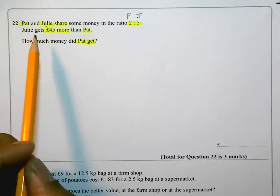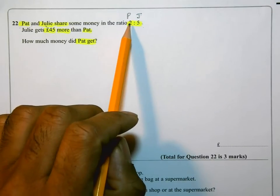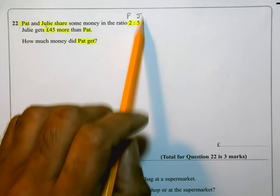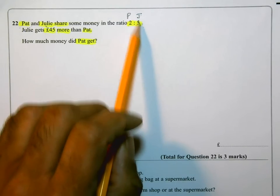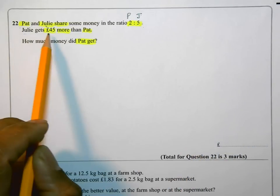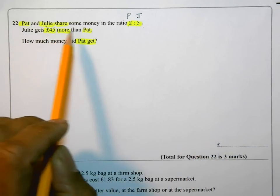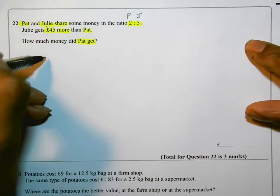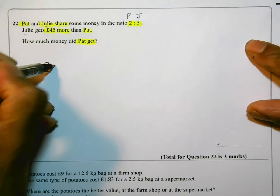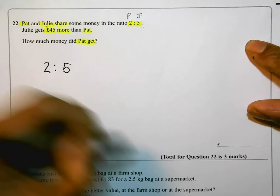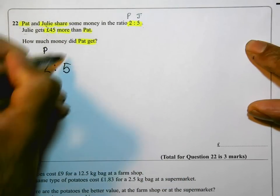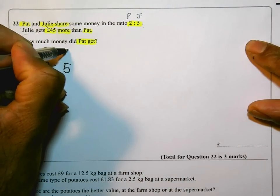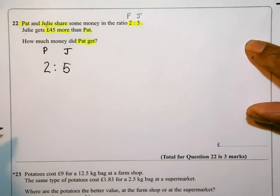From here we can see that Julie is going to get more. Julie gets £45 more than Pat. So I'm actually going to rewrite some of this. The ratio is 2:5—Pat gets 2 parts, Julie gets 5 parts.